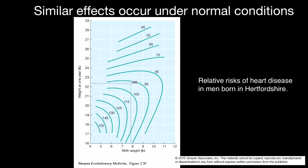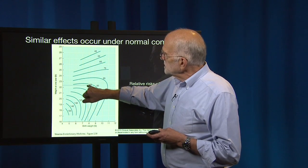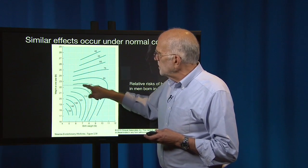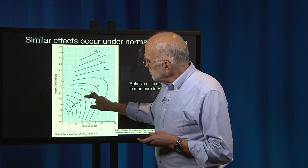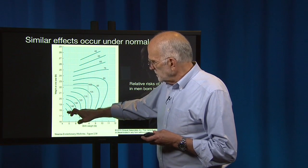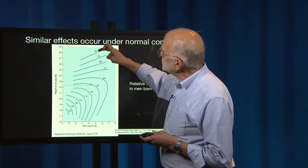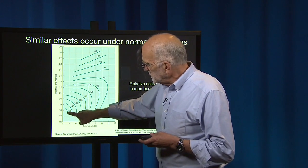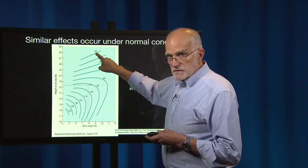Similar effects occur under normal conditions. David Barker looked at data from hospitals in Hertfordshire, examining the relative risk of heart disease as a function of birth weight on the x-axis and weight at one year on the y-axis, normalized to a risk of one for people with mean birth weight and mean weight at one year. What you can see is that the smaller the infant was, the higher the risk of heart disease, and the larger the infant was, the lower the risk — these are quite dramatic differences: one and a half times as probable versus half as probable of having heart disease.